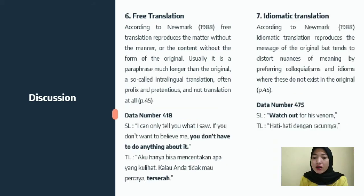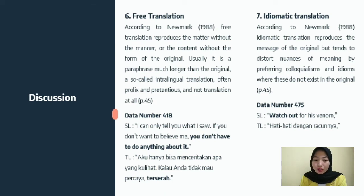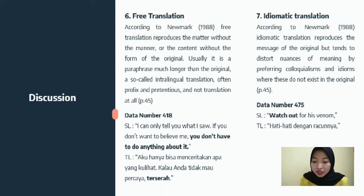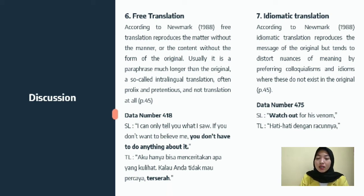The next is free translation. According to Newmark, free translation reproduces the matter without the manner, or the content without the form of the original, and is usually a paraphrase much longer than the original. In data number 1418, the phrase 'you don't have to do anything about it' is translated into 'terserah.' This is actually shorter than the original. The sentence means the speaker indicates the listener doesn't have to do what the speaker does, so it is condensed into 'terserah.'